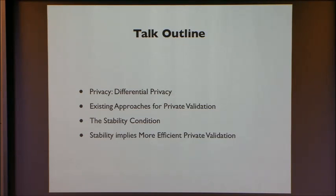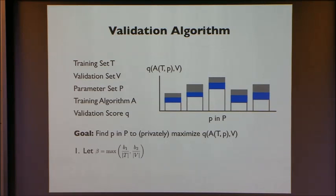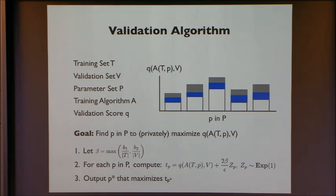Now we've defined the stability condition. Let's look at how it gives us better private validation. We are trying to find a parameter value to privately maximize the validation score. What we do is look at the max of the changes due to change in the training set and the validation set. For each parameter value, we calculate the score and add noise proportional to beta — the max. Then we output the parameter value in set P that maximizes the noisy score.